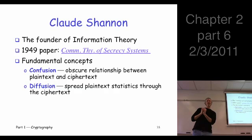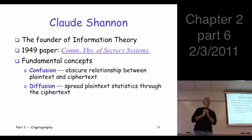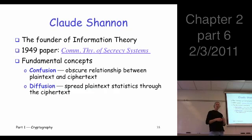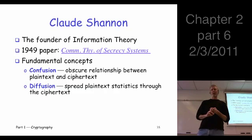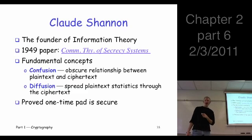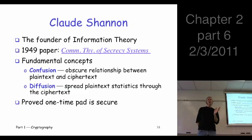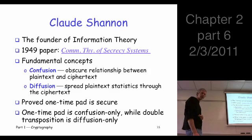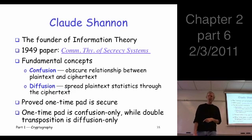On the other hand, with double transposition, the statistics — like pairs of letters — are spread out all over within the ciphertext. So double transposition is your classic example of diffusion, while simple substitution and the one-time pad are examples of confusion. Shannon also proved that the one-time pad is secure. People had known about the one-time pad for a long time and used it for lots of things, but nobody had ever rigorously shown that it was secure.